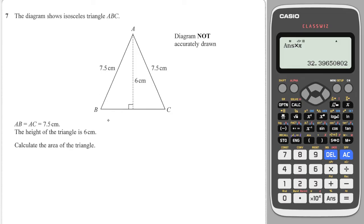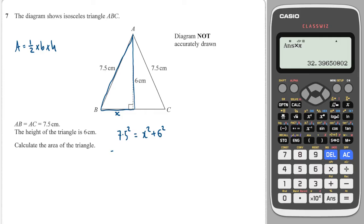Okay, next question: we have an isosceles triangle and it gives us the height. It says calculate the area. The area of a triangle is a half times base times height — I know the height but I don't know the base. What I can do is split it into a right angle triangle, and I call the bottom half X. From Pythagoras's theorem, the hypotenuse squared is equal to the two shorter sides squared and added together, so subtracting 6 squared from both sides and square-rooting gives me X.